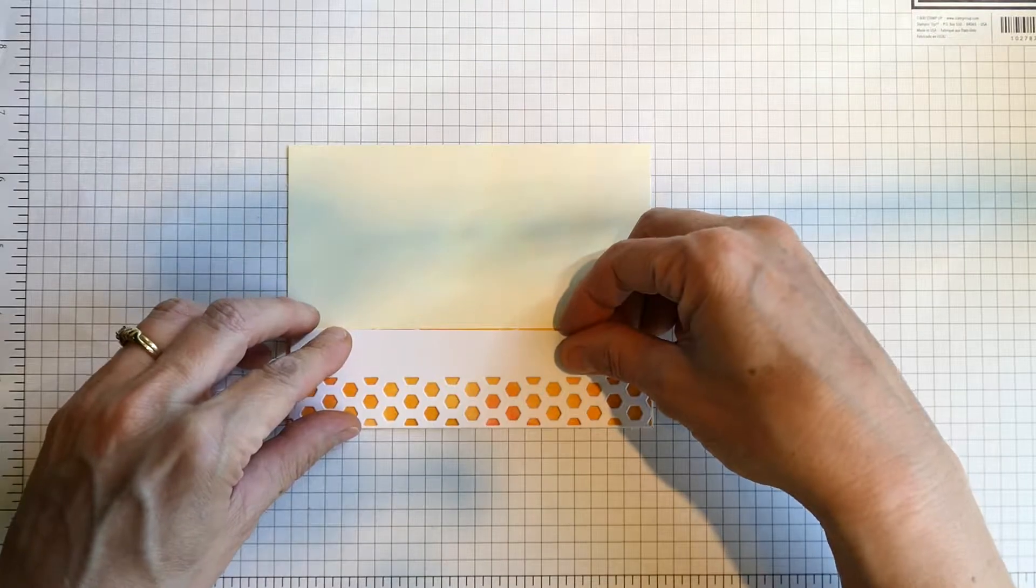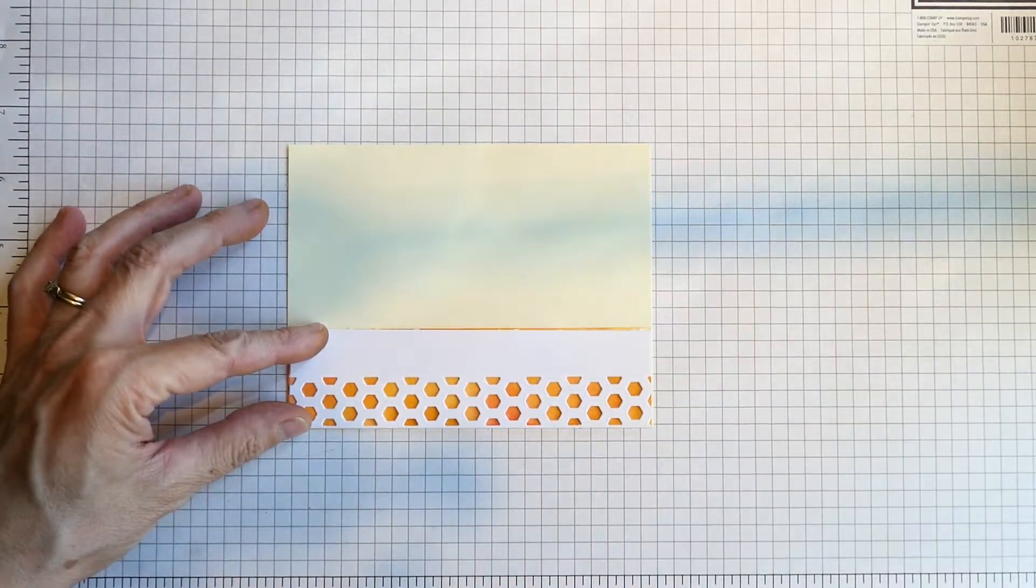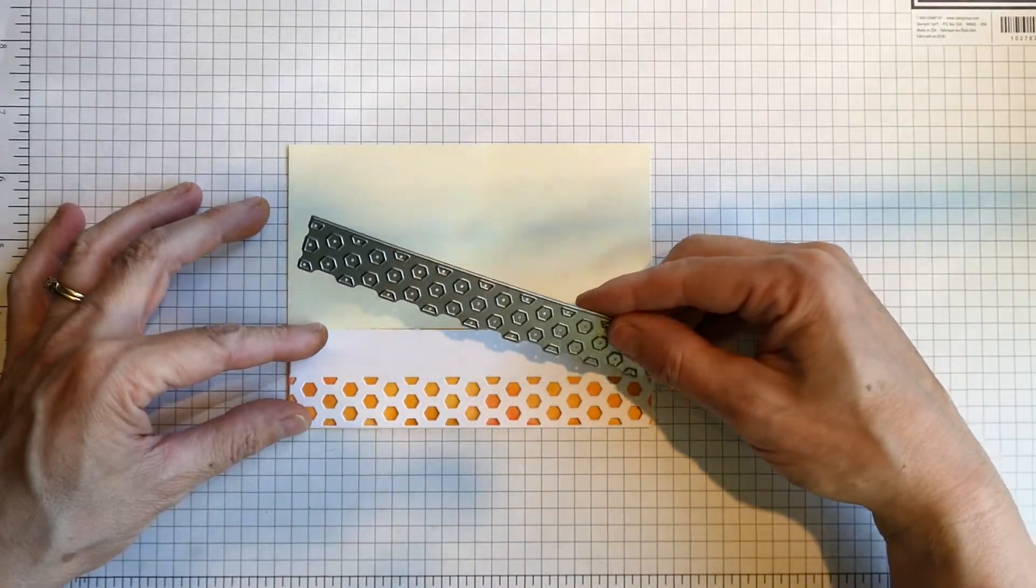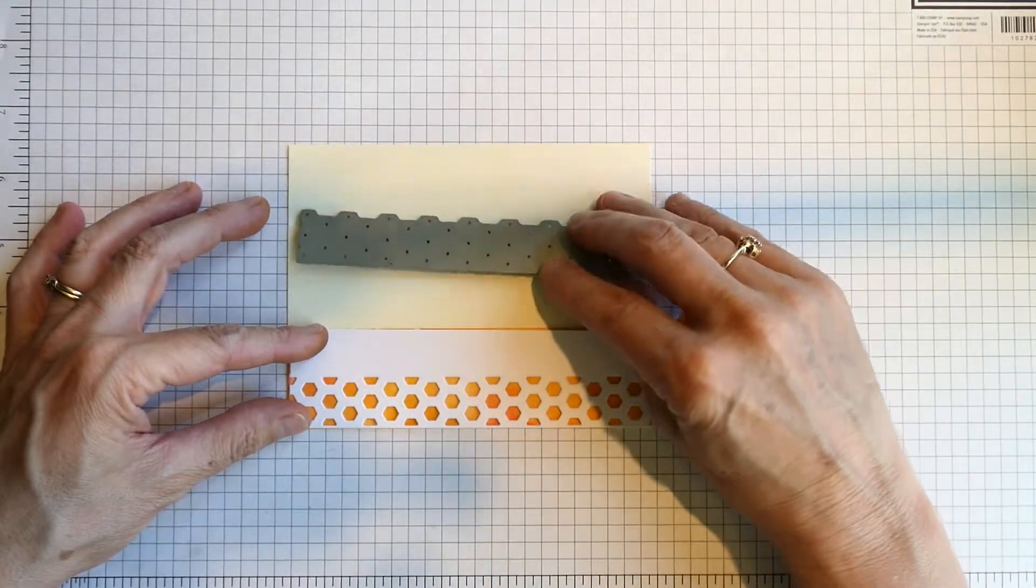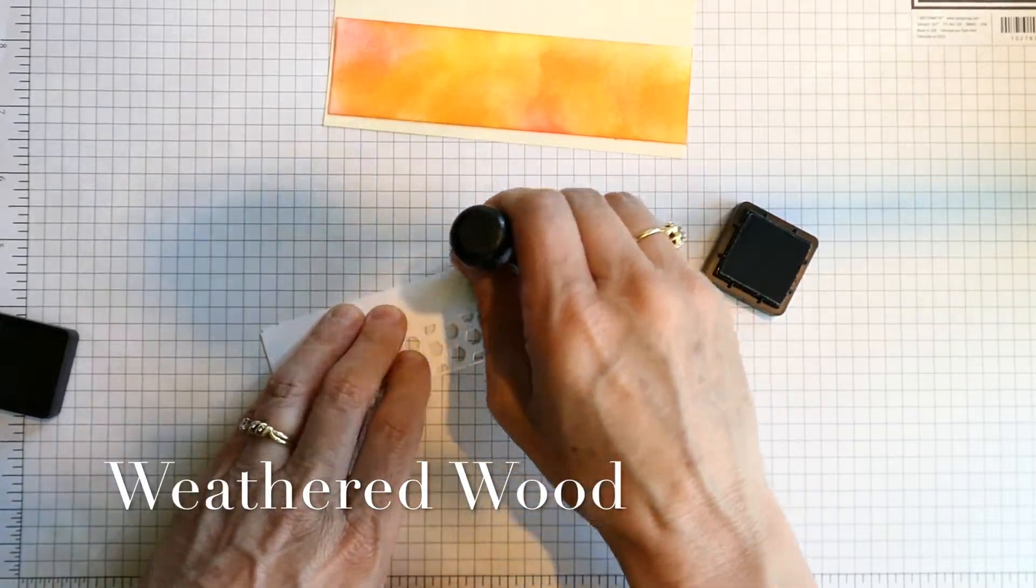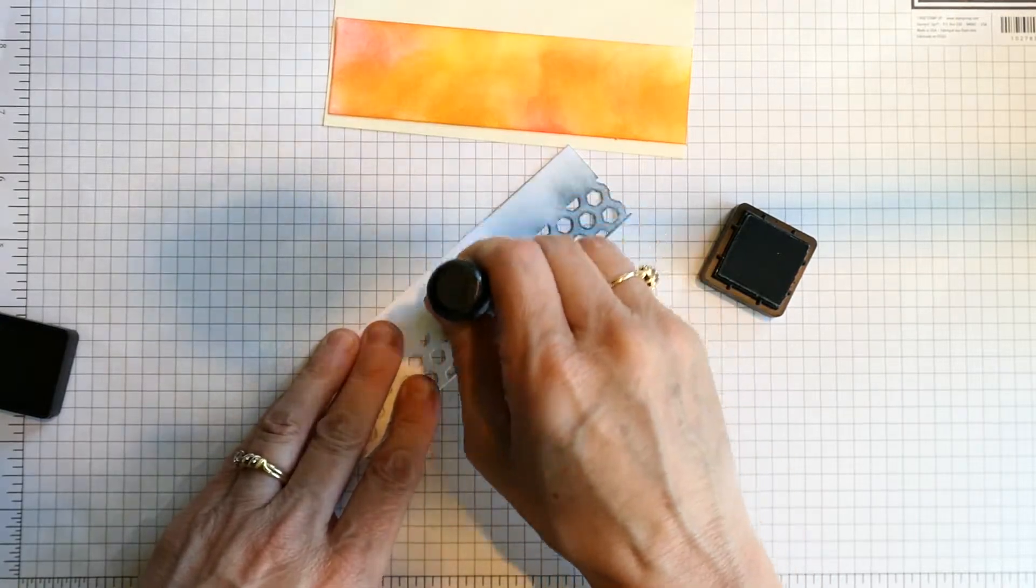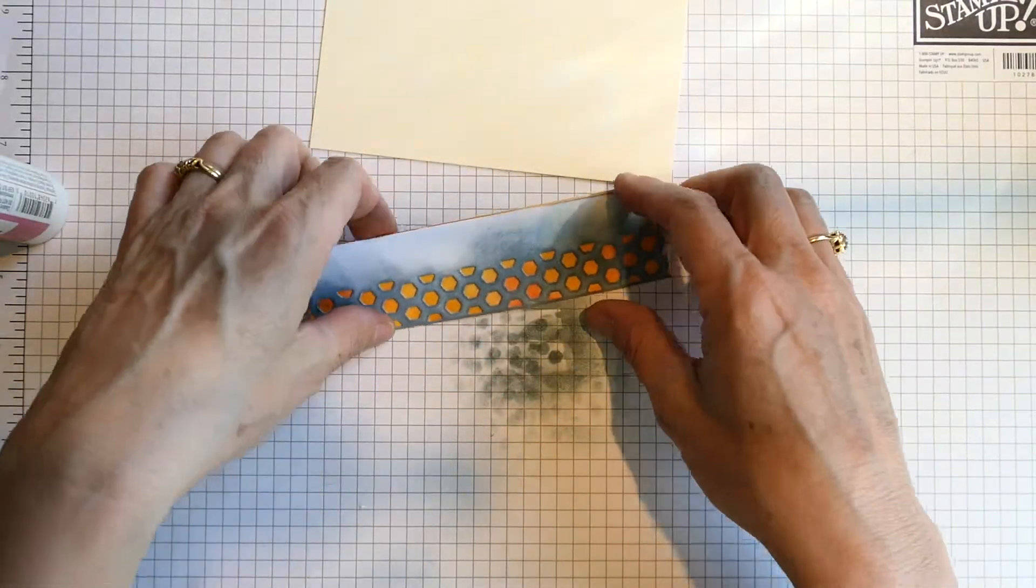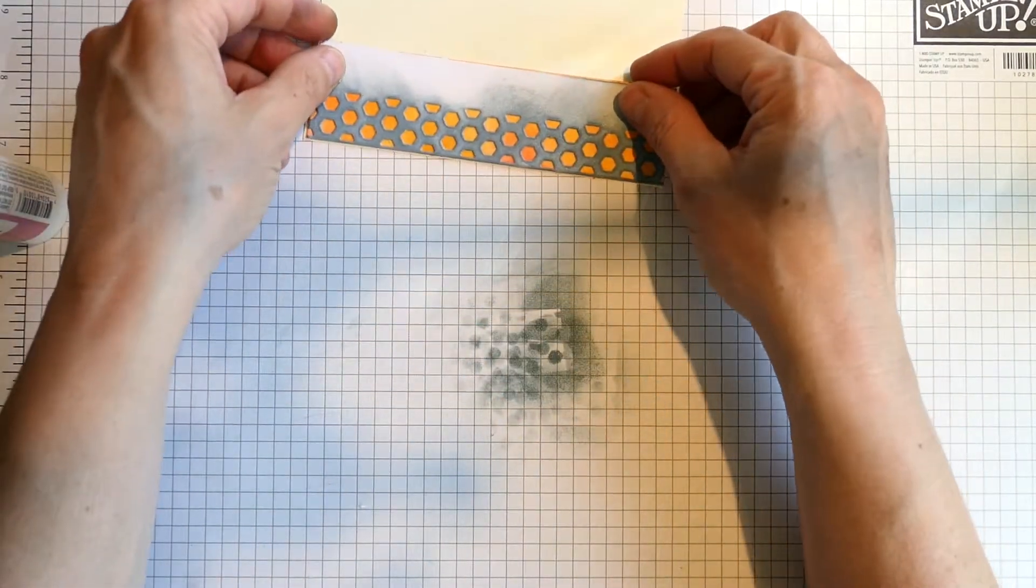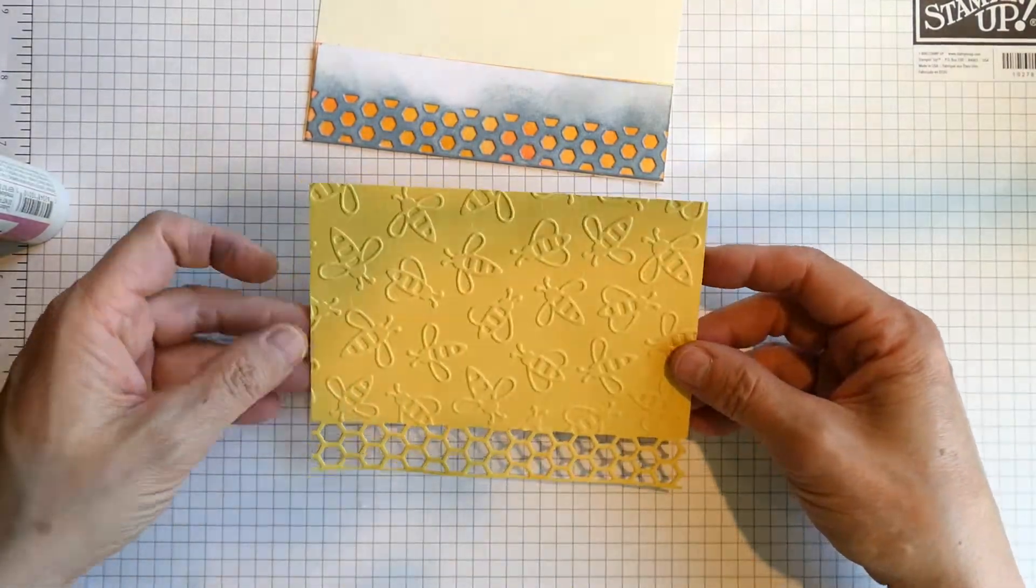Adding the strips was really easy because I cut them to be the same size as my card base, which was five and a half inches wide. I just die cut the edge of the strip, wasn't too concerned with how tall it was, just the width. Then I colored it with weathered wood, which gave a nice grayish blue color, and glued that on top.